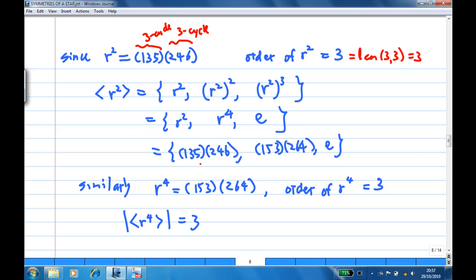Similarly, R^4 also consists of a product of two 3-cycles. So, the order of R^4 is 3. Therefore, the size of the cyclic subgroup generated by R^4 and R^2 are all 3.